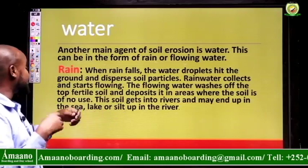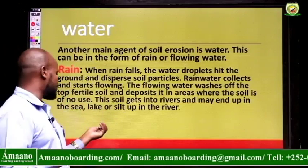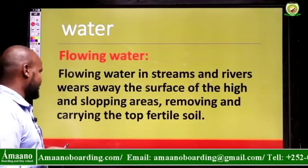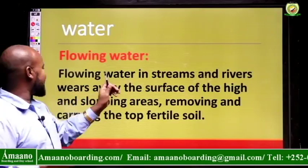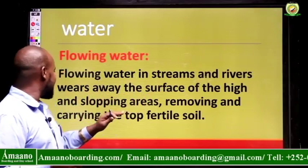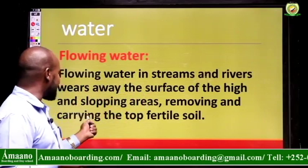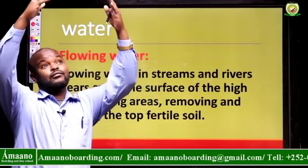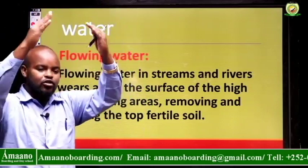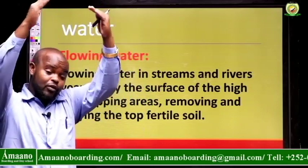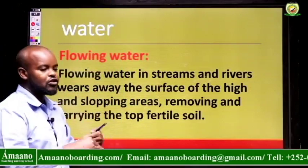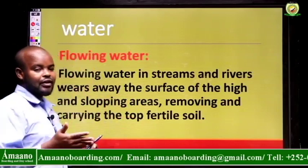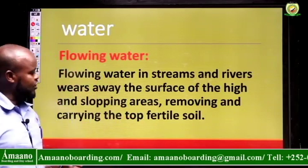This soil gets into rivers and may end up in seas, lakes, or silts up in rivers where it is not needed. Flowing water in streams and rivers washes away the surface of high and sloping areas, removing and carrying the top fertile soil. For example, if there is a stream coming down the slope of a mountain or sloping land, it will wash away all the soil in its path.